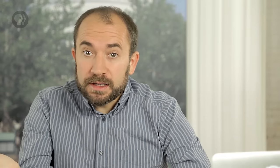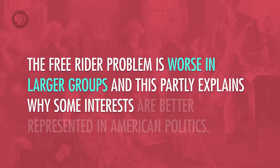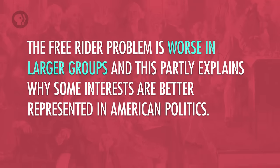This becomes a problem when other people, not wanting anyone to get a free ride, also refuse to contribute to the project, and it doesn't get done. The free rider problem is worse in larger groups, and this partly explains why some interests are better represented in American politics. Because large groups are more anonymous, it's easier to free ride. There are lots of other people who probably care more than a single individual, and knowing this, the single individual rationally chooses to free ride. Also, the larger the group, the easier it is for an individual to claim that their efforts don't matter, which is a smaller version of the voter paradox.